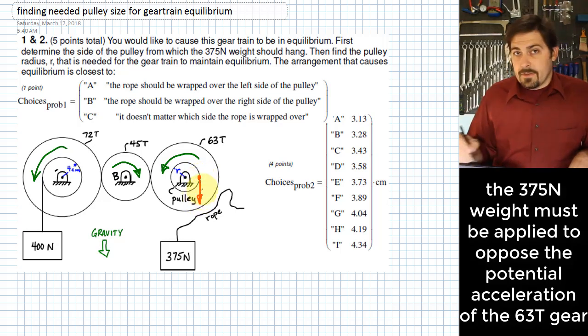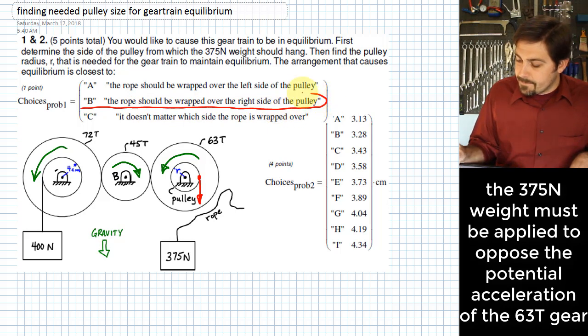That implies that we would need to have the rope come off of the right side. And that's why we would answer B for the first part of this problem.